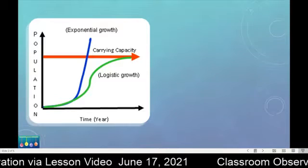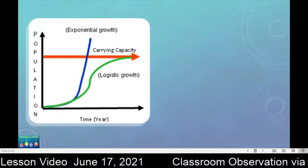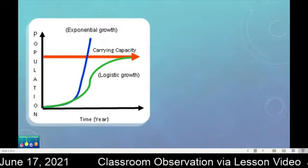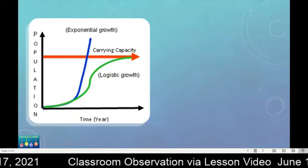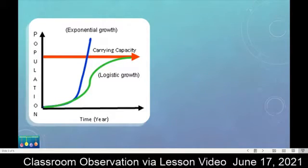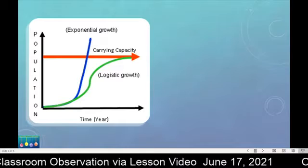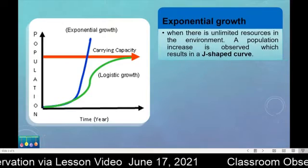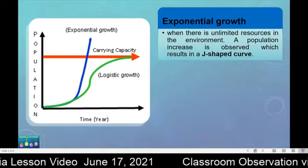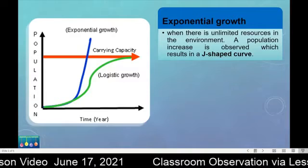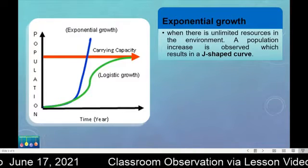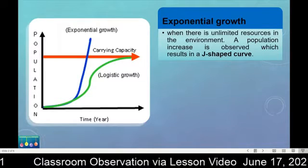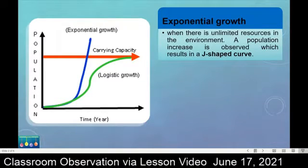Population growth has two types: exponential growth and logistic growth. As you can see in the graph shown, exponential growth is represented by the blue curve while logistic growth is in green. The horizontal red line represents the carrying capacity. Exponential growth is a type of population growth when there are unlimited resources in the environment, resulting in a J-shaped curve.